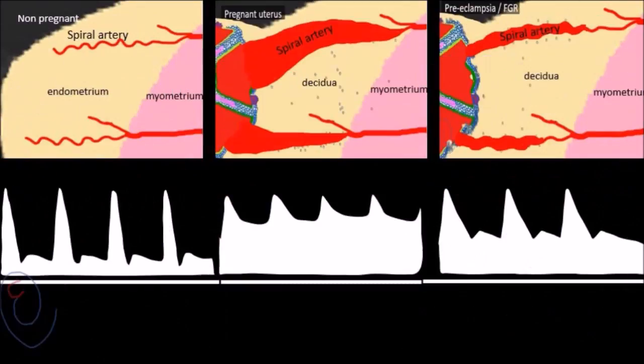To summarize, in the non-pregnant uterus, the highly convoluted high-resistance spiral arteries result in a diastolic pattern characterized by early diastolic notch and reduced end-diastolic flow. But during normal pregnancy, due to remodeling of the spiral arteries, the notch disappears and the end-diastolic flow markedly increases.